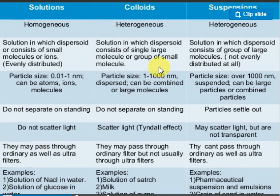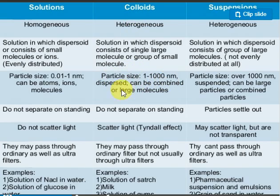Now coming to heterogeneous solutions — these are of two types: colloidal solutions and suspensions. Colloidal solutions seem to be like homogeneous solutions but they are not — they are heterogeneous. The particle size of colloidal solutions ranges from 1 nanometer to 1000 nanometers. They have a dispersion phase and a dispersion medium. The dispersion medium is the large-content component, like solvent, and the dispersion phase is the small-content component, like solute. Colloidal solutions do not separate easily on standing.